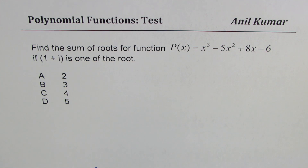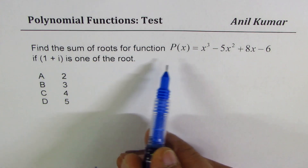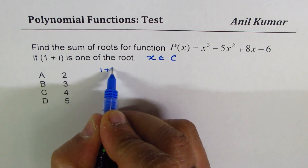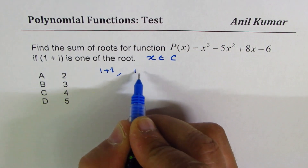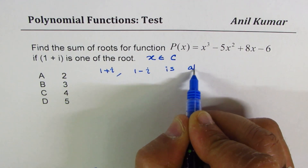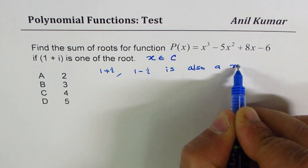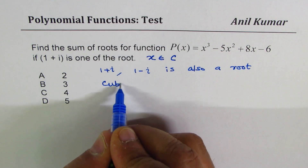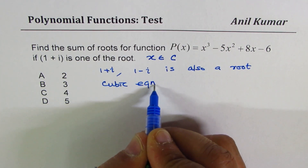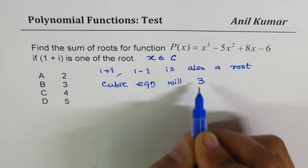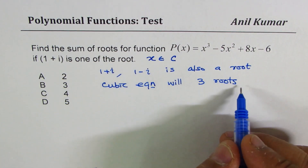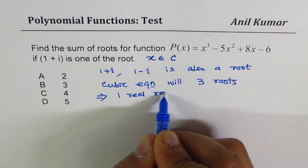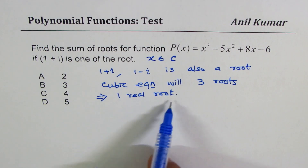It is important to understand that we are dealing with the domain of complex numbers, so x belongs to complex numbers. Now if 1 + i is a root, that means 1 - i is also a root. So we already have two roots, and we know that a cubic equation will have three roots — meaning we are looking for one real root.